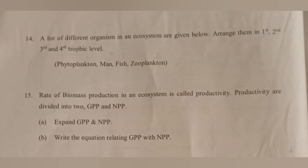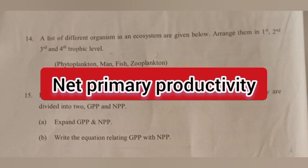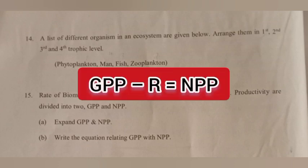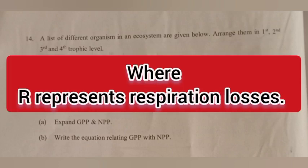Question 15: The rate of biomass production in an ecosystem is called productivity. Productivity is divided into two types: GPP and NPP. A) Expand GPP and NPP. Answer: GPP — Gross Primary Productivity; NPP — Net Primary Productivity. B) Write the equation relating GPP with NPP. Answer: GPP minus R equals NPP, where R represents respiration losses.